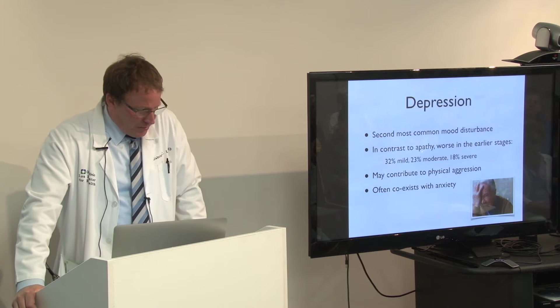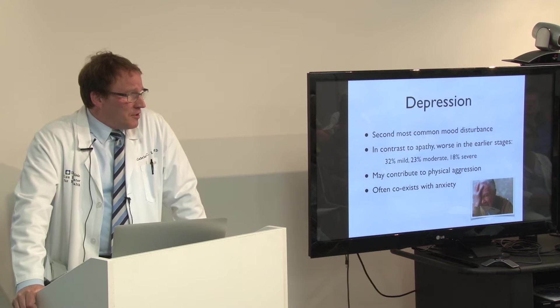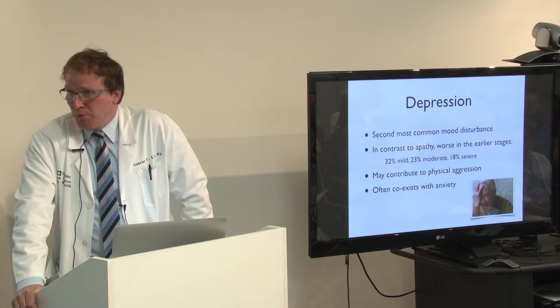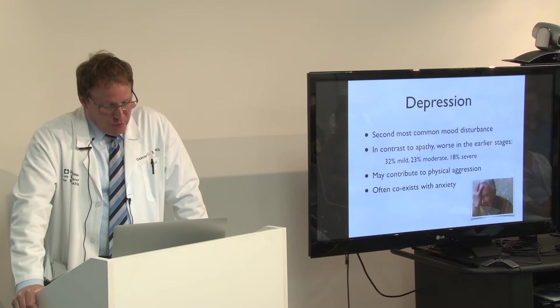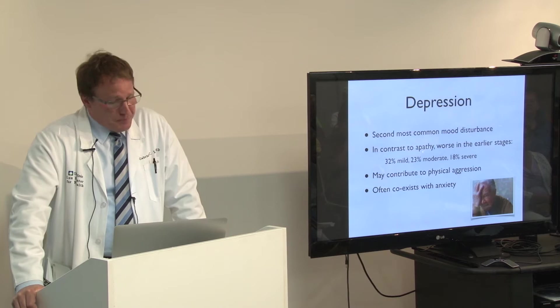Depression — one of my supervisors when I was training said, it takes a really good brain to be depressed, because you need insight. You need to understand what's happening to you to be depressed. So it's not surprising that depression, when it occurs, occurs early in the disease and not so much in the later stages. It's worse in the early stages and less present in the severe stages. Being depressed can contribute to physical aggression, and it often coexists with anxiety.